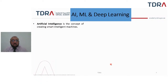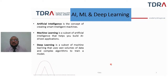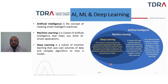Now we discuss AI, machine learning, and deep learning. Artificial intelligence is the concept of creating smart intelligent machines which mimic human behaviors. Machine learning is a subset of AI that helps you build AI-driven applications. Deep learning is a subset of machine learning that uses vast volumes of data and complex algorithms to train a model.